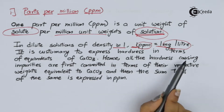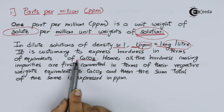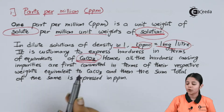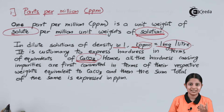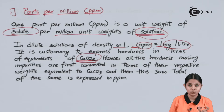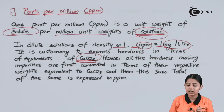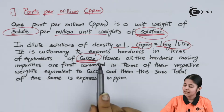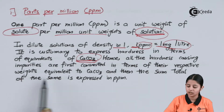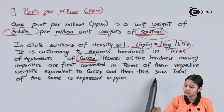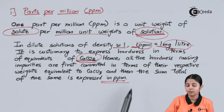It is customary to express hardness in terms of equivalence of CaCO3. Why CaCO3? Because the molecular formula weight of CaCO3 is 100, meaning the equivalent weight of CaCO3 is 100 divided by 2, which is 50 — both easy numbers. Another important reason is that CaCO3 forms a precipitate most of the time when we convert hard water into soft water. Hence all hardness-causing impurities are first converted in terms of their respective weights equivalent to CaCO3, and the sum total is expressed in PPM.